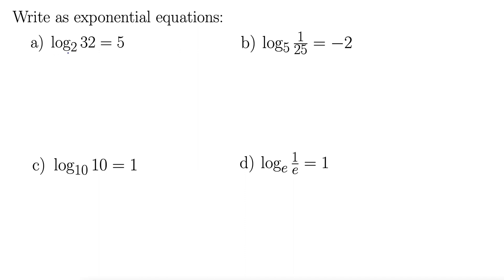So let's start with A. We have log base 2 of 32 equals 5. So to write this in exponential form, or as an exponential equation, you start with the base. This is log base 2, so this becomes the base in the exponential form.